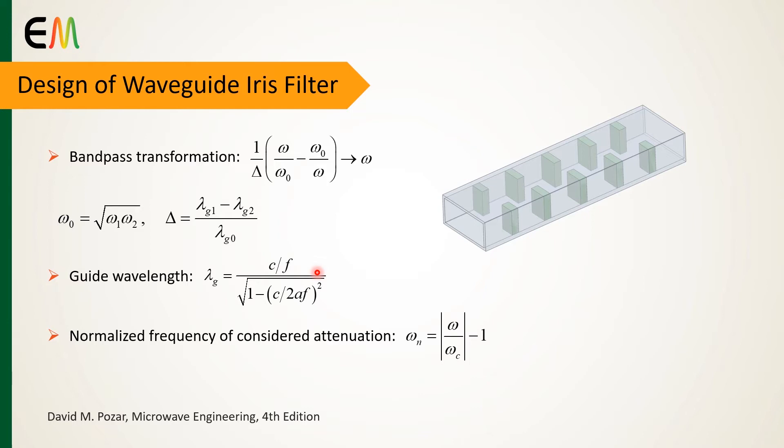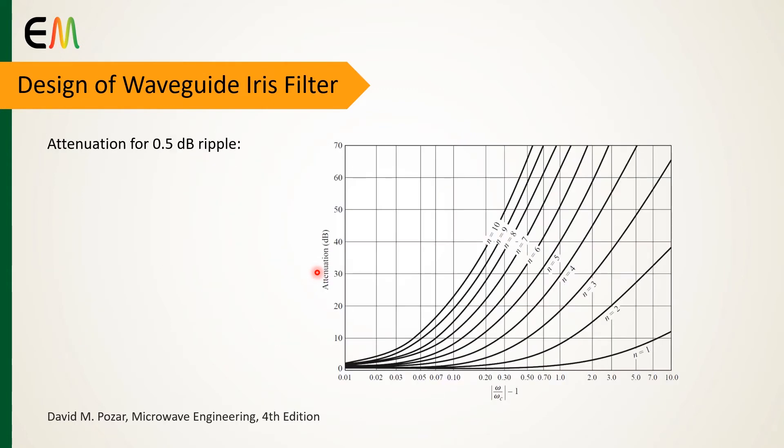The important parameter to determine the filter order is the normalized frequency of considered attenuation. By using the attenuation curves versus the normalized frequency, we can set the lowest filter order to achieve the considered attenuation. This plot is an example of attenuation curves for 0.5 dB ripple level.